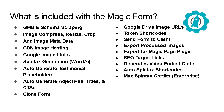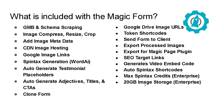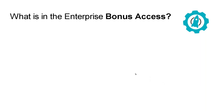On the enterprise plan, you get the max Spintex credits we offer — 500,000 — and 20 gigabytes of image storage. Nobody's even come close to that amount of space; I don't think anybody's even close to one gigabyte. You can also buy more storage if you need it.